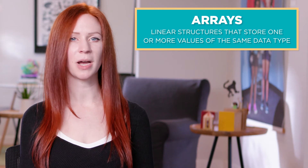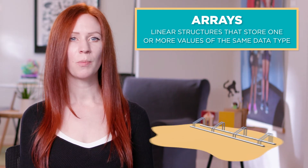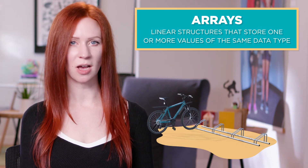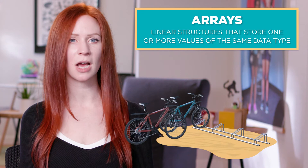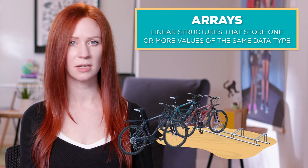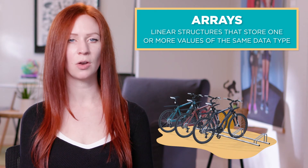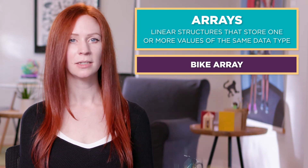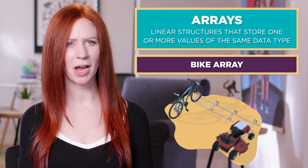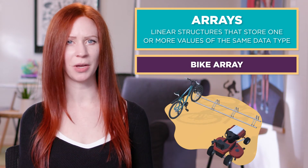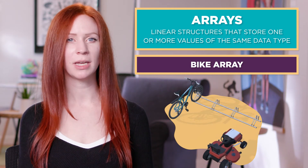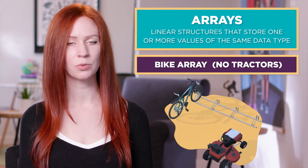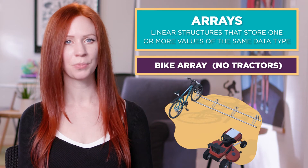Imagine a bike rack. Bike racks have a fixed number of slots — this one has four slots. Each slot can only hold one type of object: a bike. You can't park a tractor in this bike array; we would need to put that tractor in its own tractor array.